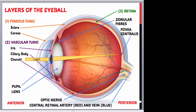Albinos lack melanin in all parts of the body, including the eye, which means that light gets scattered within the eyeball. Albinos often have to wear sunglasses even indoors, as even moderately bright light is perceived as a bright glare as a result of the light scattering.